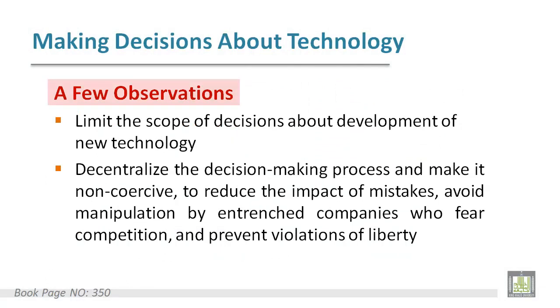The first observation: try to limit the scope of decisions about developments of new technology. Why? Because of the difficulty of the process of prediction and expectations. The second observation: try to decentralize the decision-making process.